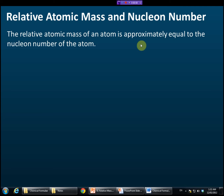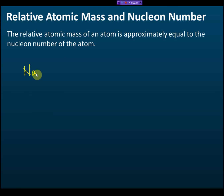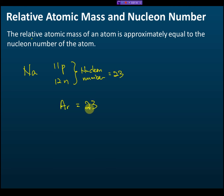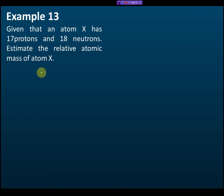The relative atomic mass of an atom is approximately equal to its nucleon number. For example, sodium has 11 protons and 12 neutrons, so the nucleon number is 11 plus 12 equals 23. Since the relative atomic mass is approximately equal to the nucleon number, the relative atomic mass of sodium is also 23.